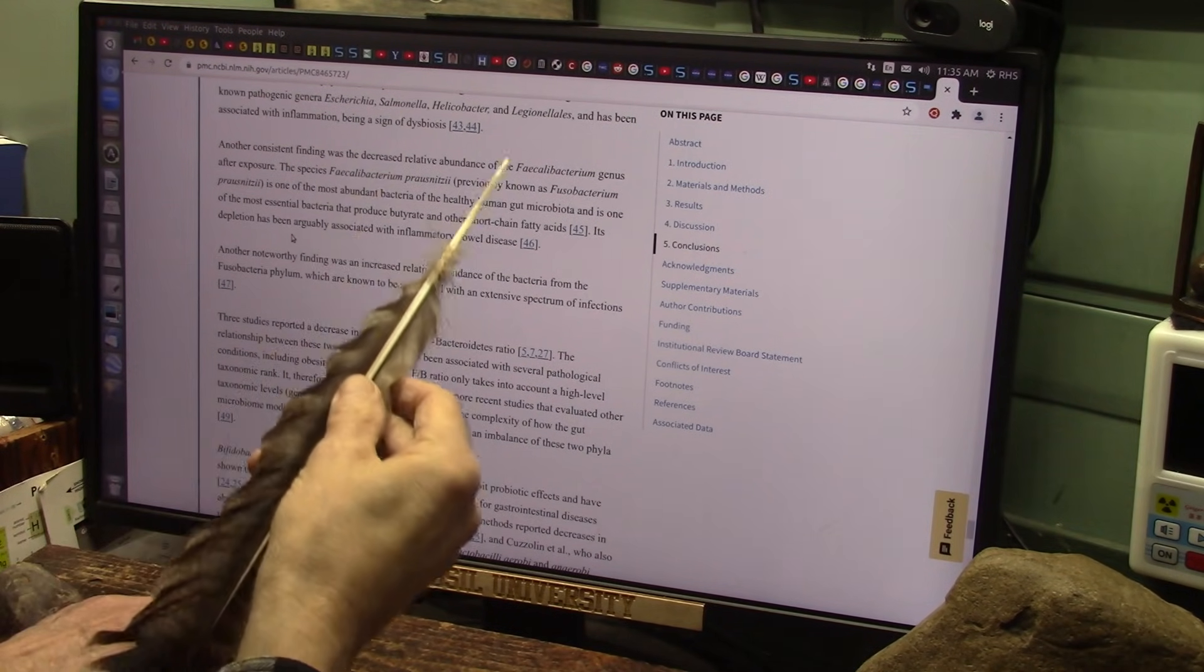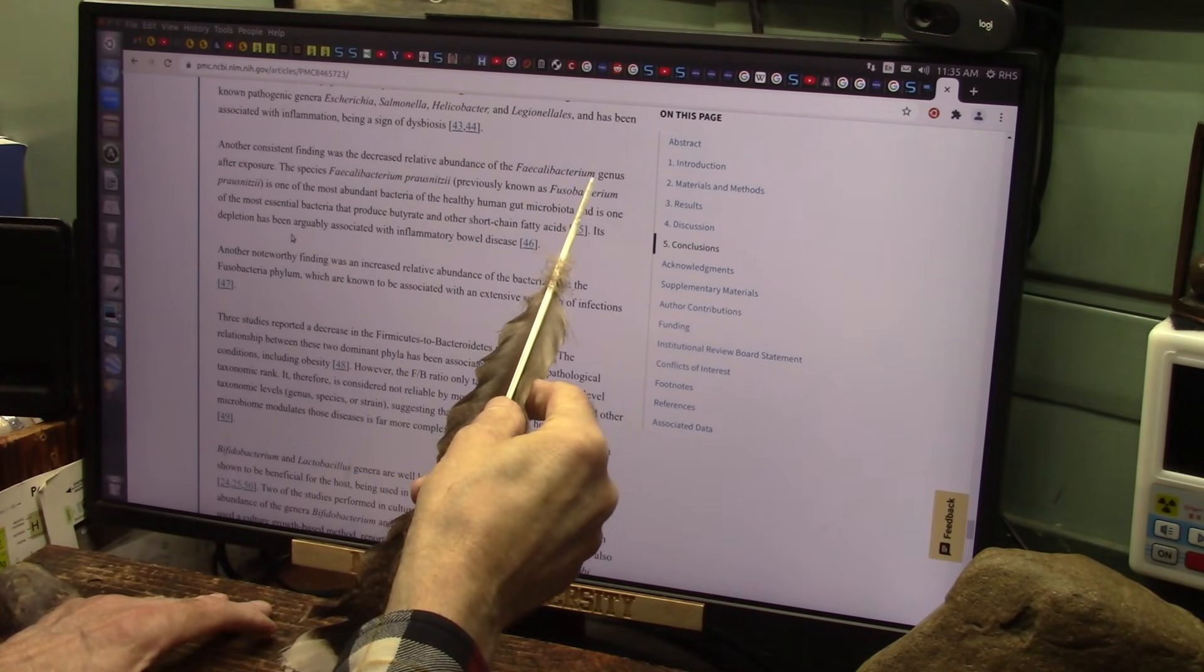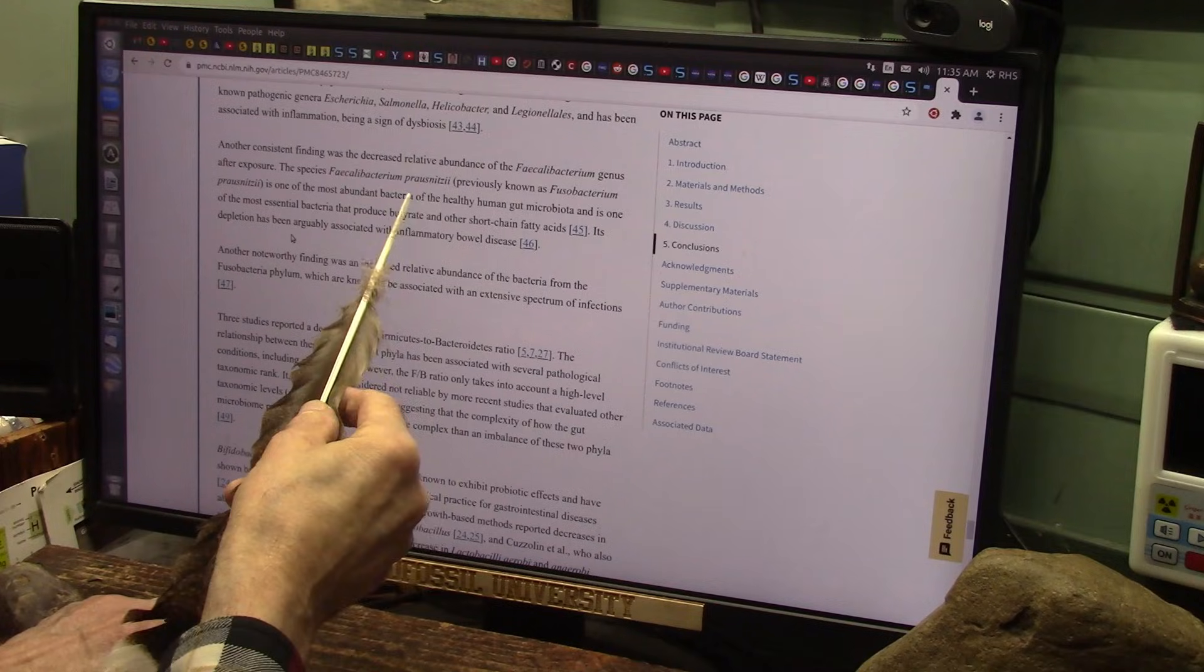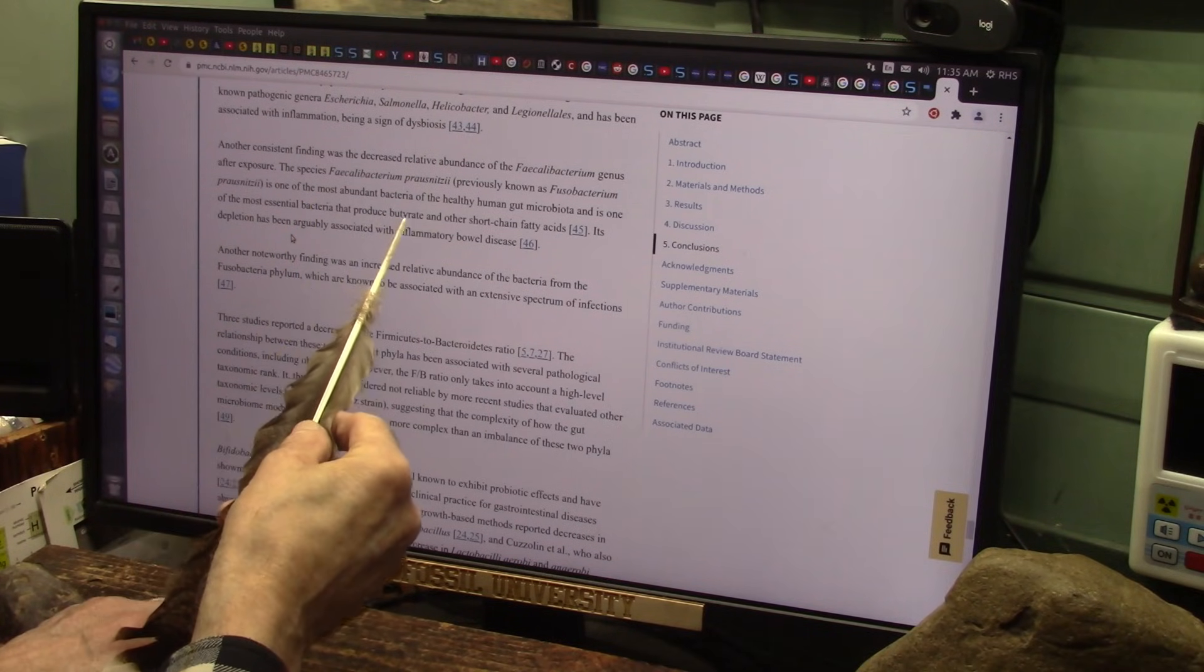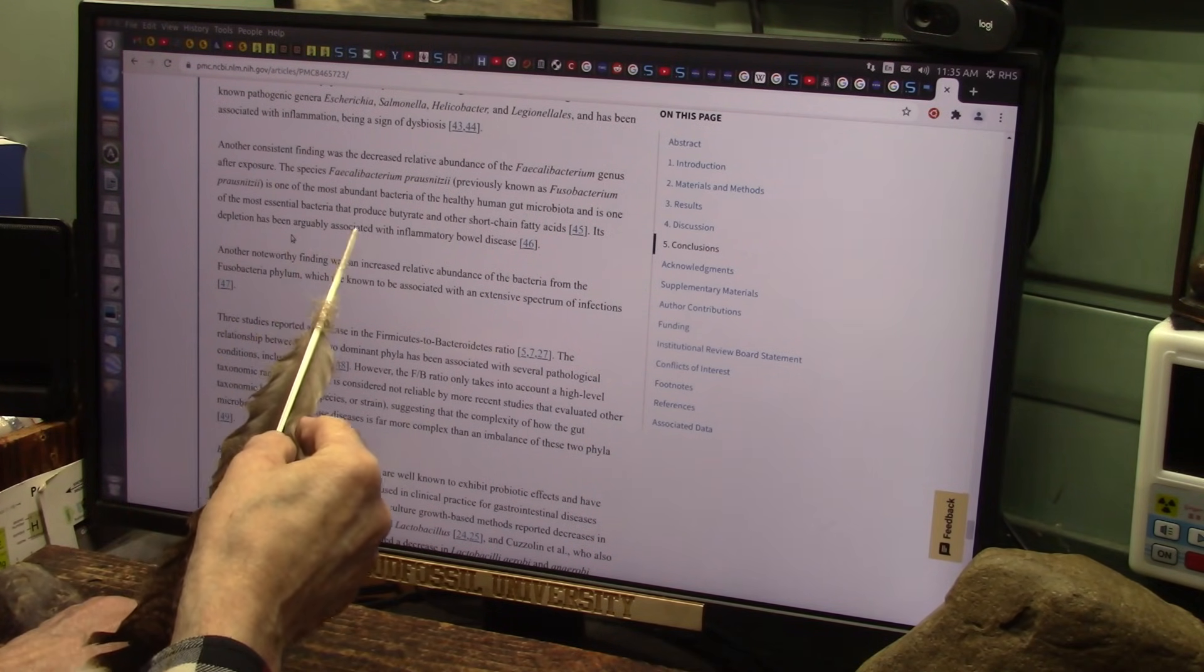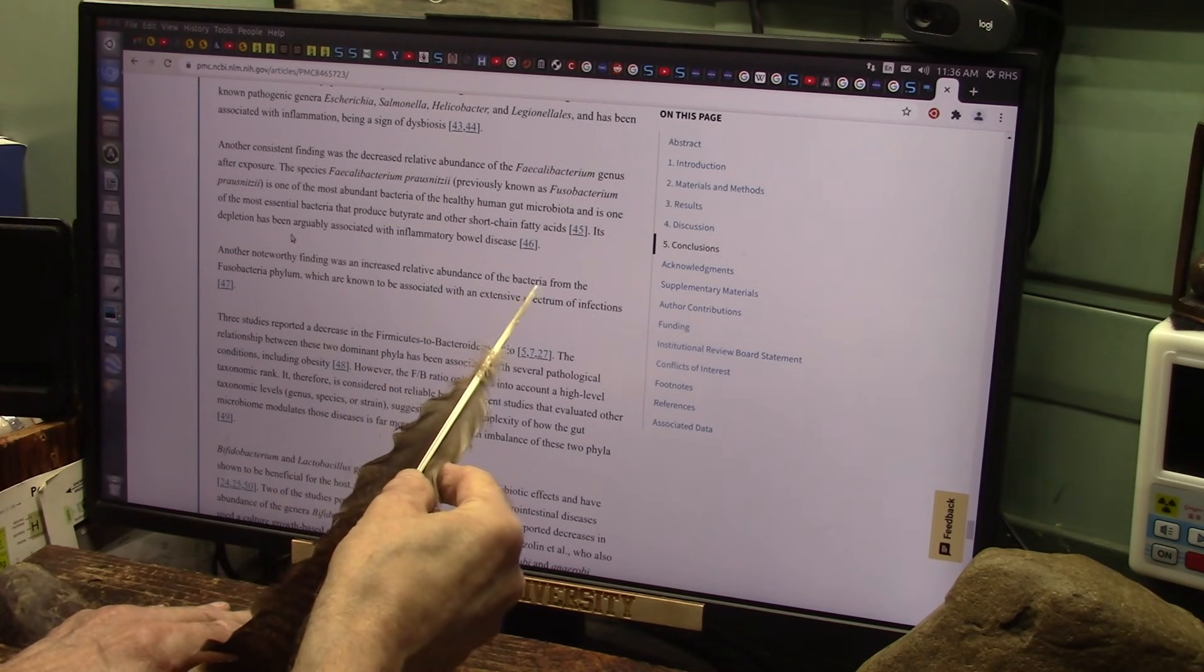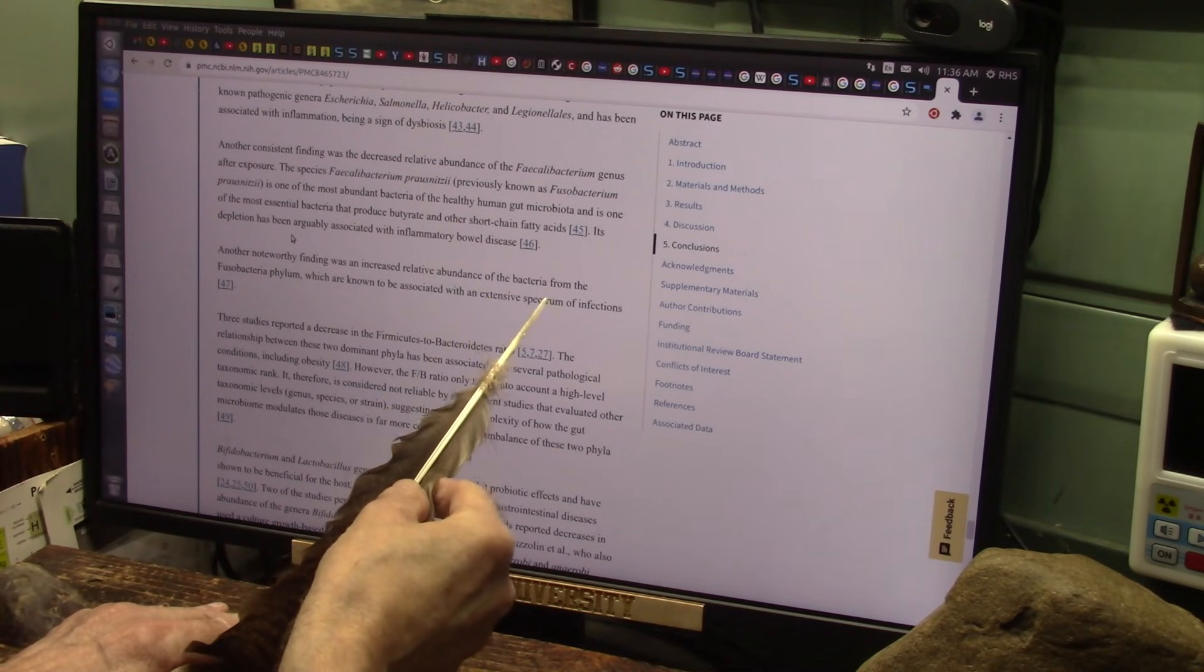This is just from the study. A consistent finding was the decreased relative abundance of Faecalibacterium genus after exposure. This species, Faecalibacterium prausnitzii, is one of the most abundant bacteria of the healthy human gut microbiome and is one of the most essential bacteria that produce butyrate and other short-chain fatty acids. Its depletion has been arguably associated with inflammatory bowel disease. Another noteworthy finding was an increase in relative abundance of bacteria from the Proteobacteria phylum, which are known to be associated with extensive spectrum of infections.